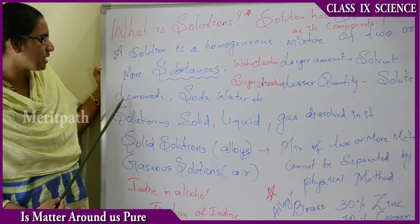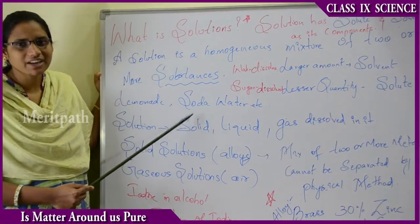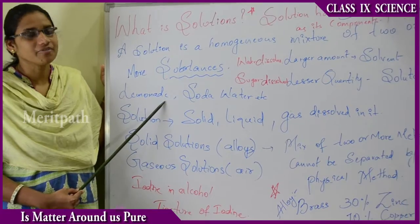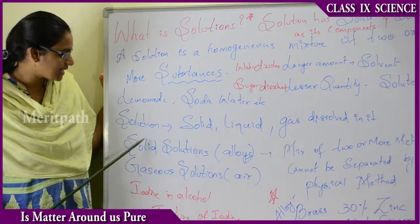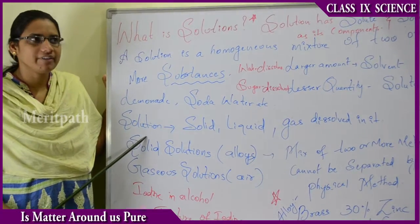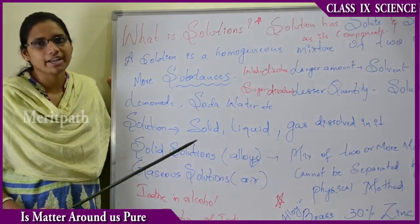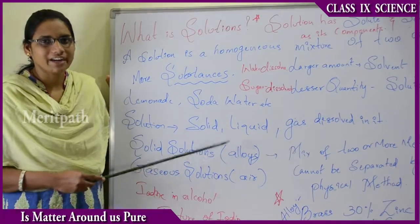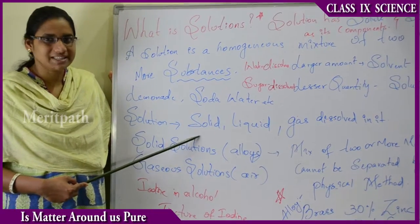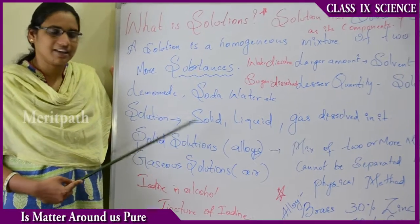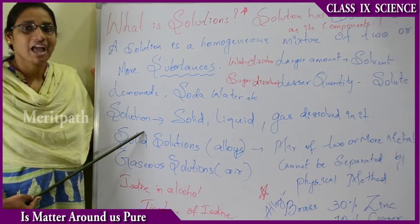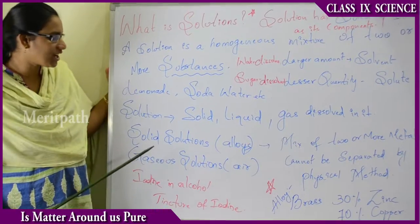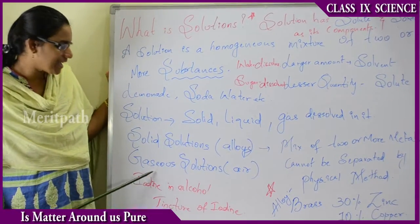For example, lemonade and soda water are solutions — mixtures of two or more substances. We commonly assume a solution involves a solid, liquid, or gas dissolved in water, such as soda water (gaseous), lemon water (liquid), or sugar dissolved in water (solid). But there are also solid solutions and gaseous solutions beyond these common examples.